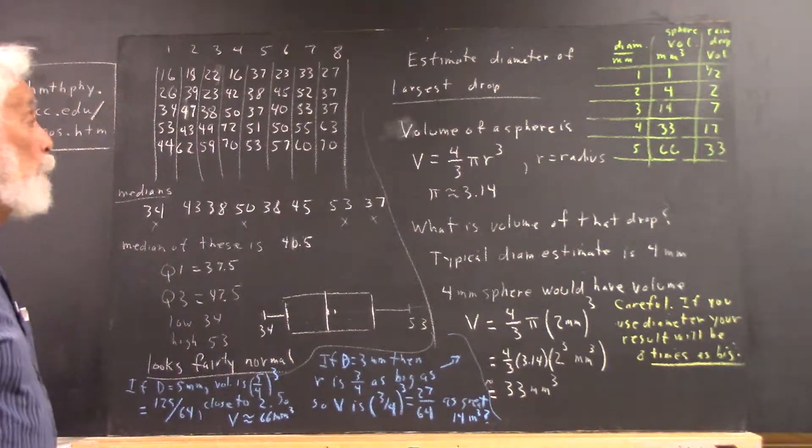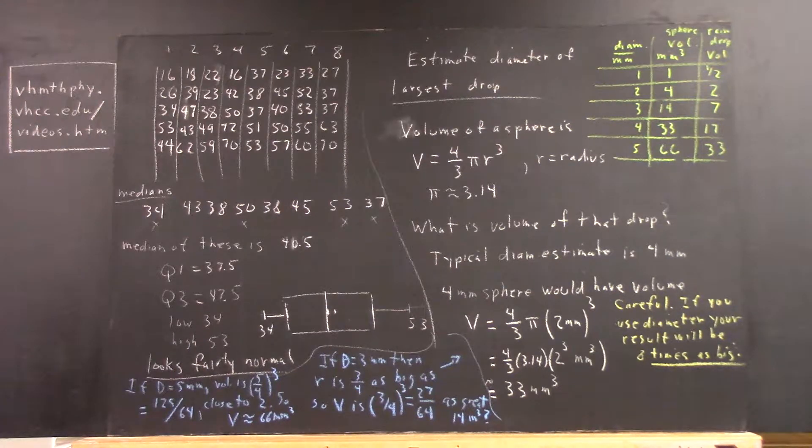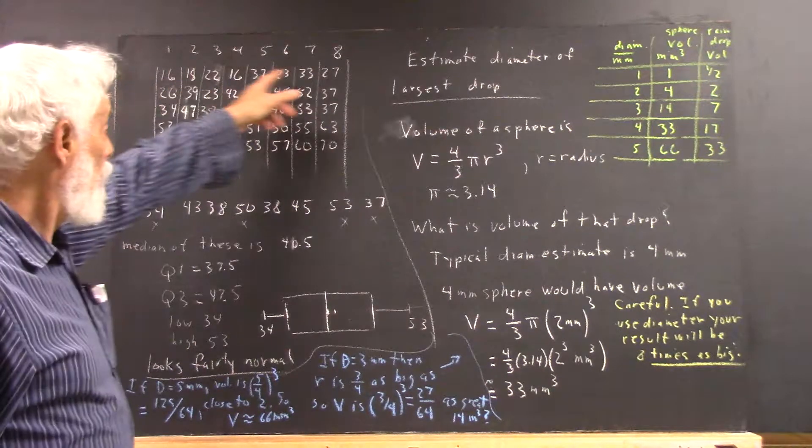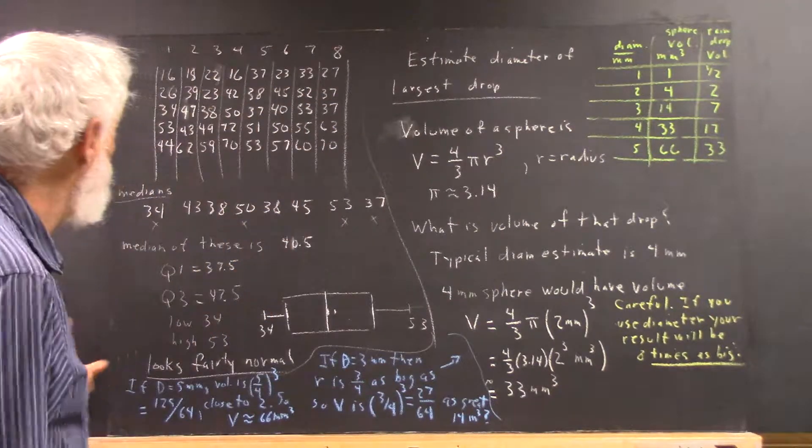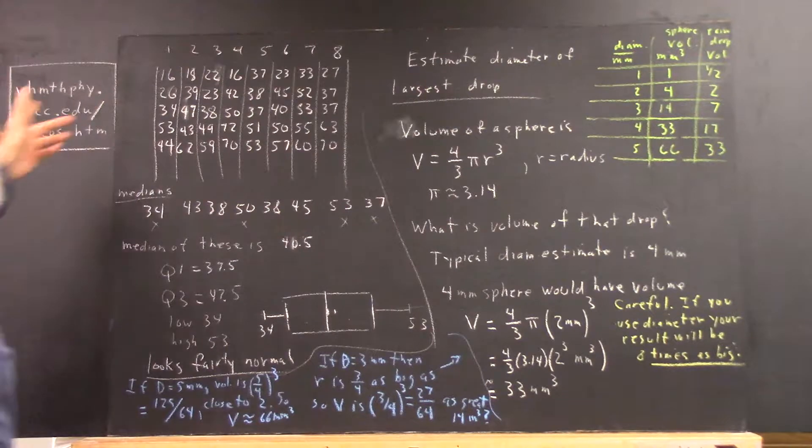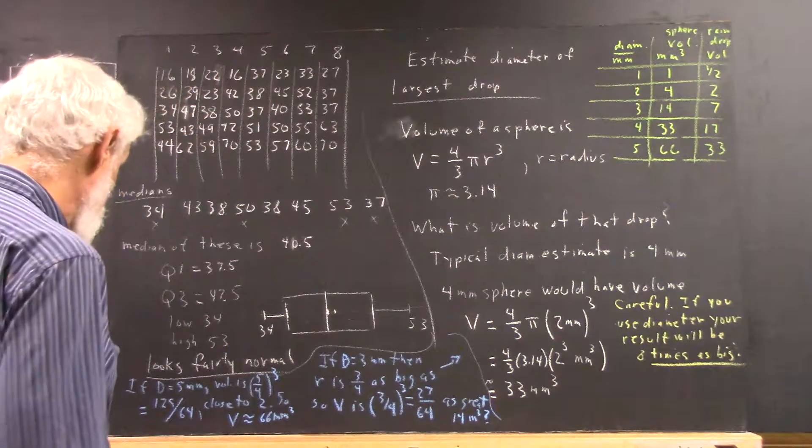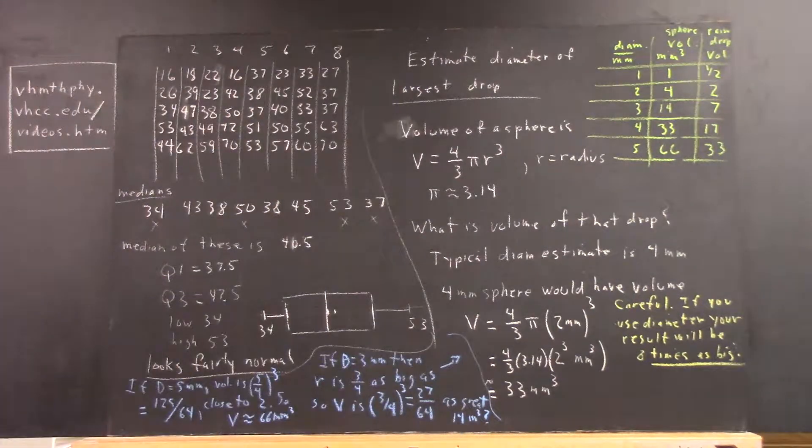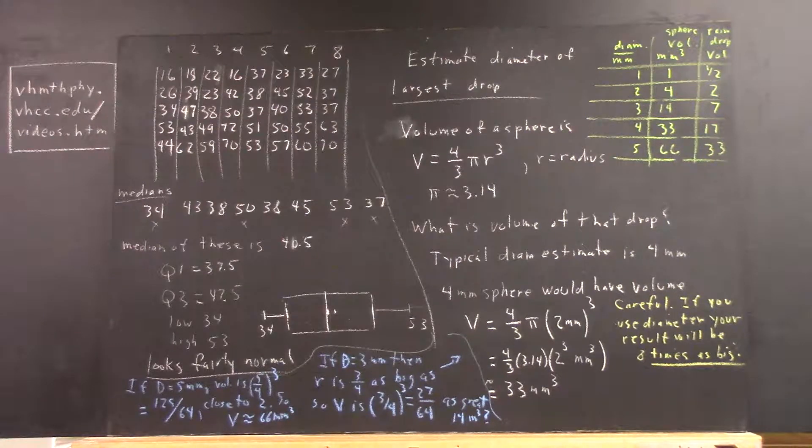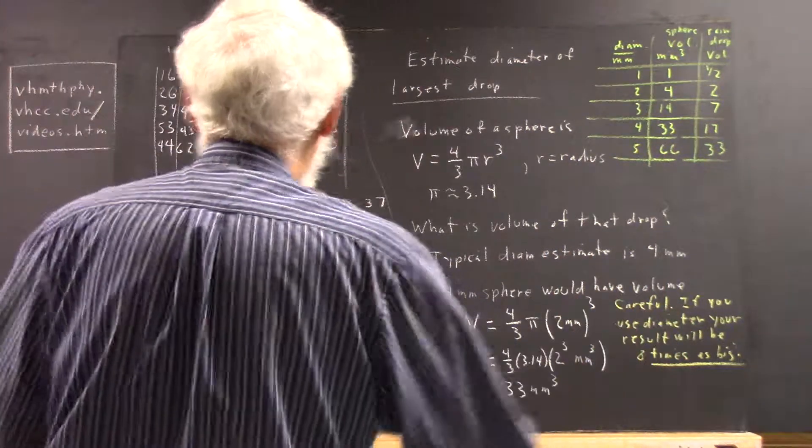Now, another thing we did in class is everybody counted how many drops there were in each of the rectangles. There are eight rectangles. The eight rectangles you have that don't include the ones right at the edge of the picture.